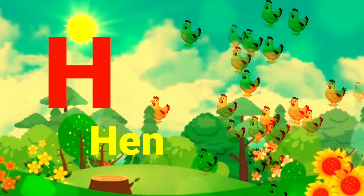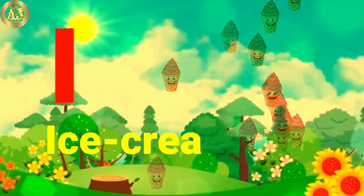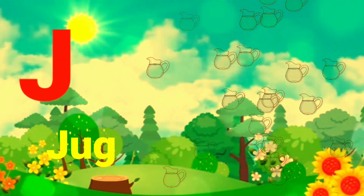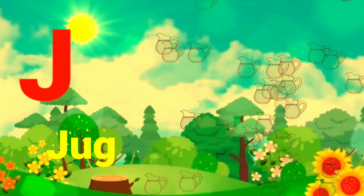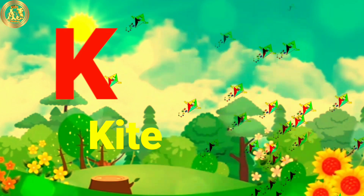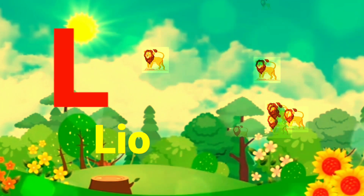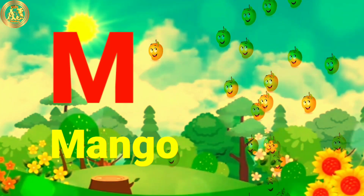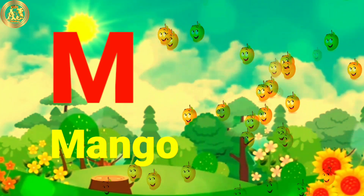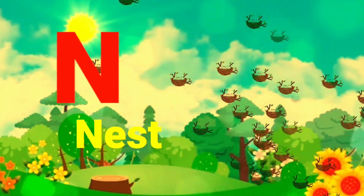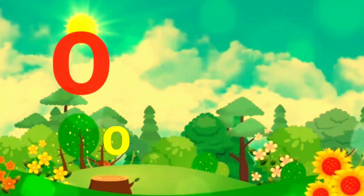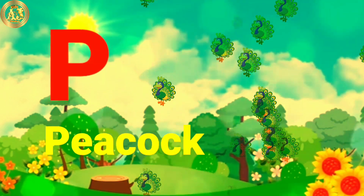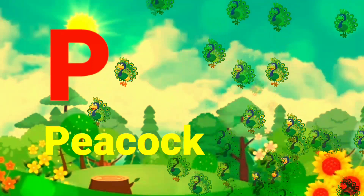H for hen. I for ice cream. J for jug. K for kite. L for lion. M for mango. N for nest. O for orange. P for peacock.